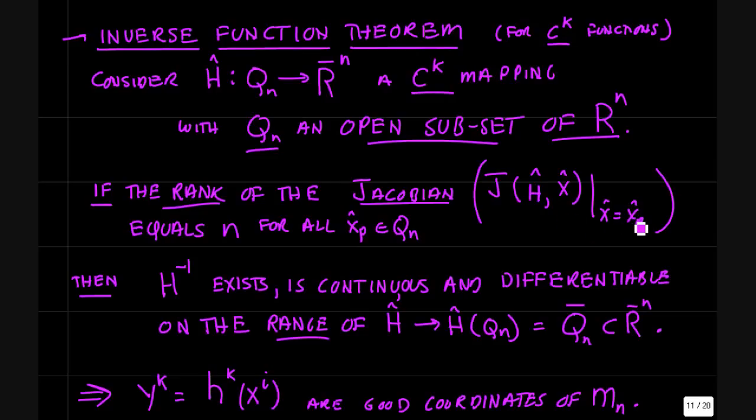If h is invertible, namely if the rank of the Jacobian J of h on x at x equals x_p, if the rank of this Jacobian is equal to n for all x_p in Q^n,